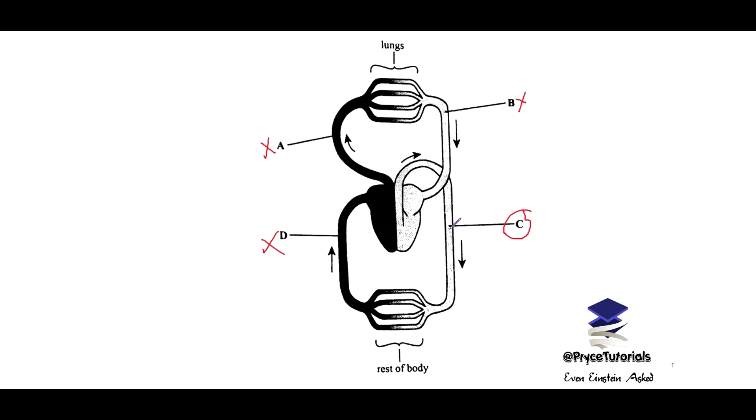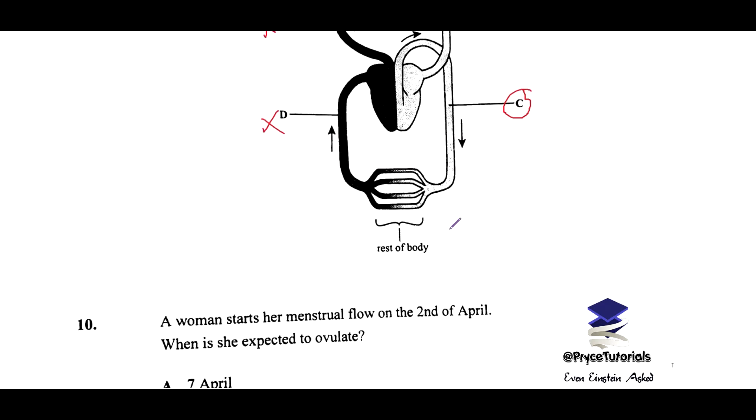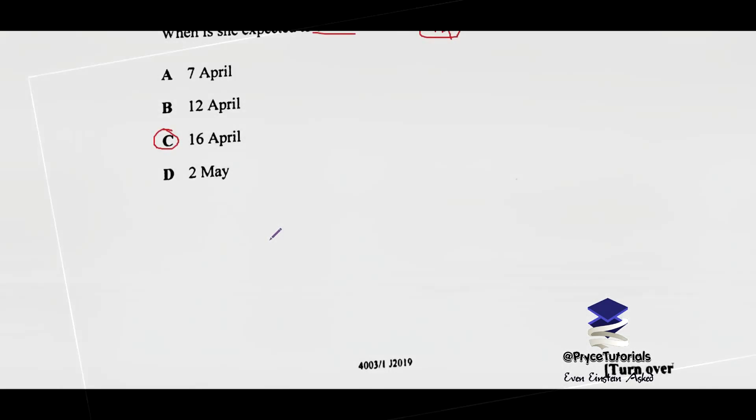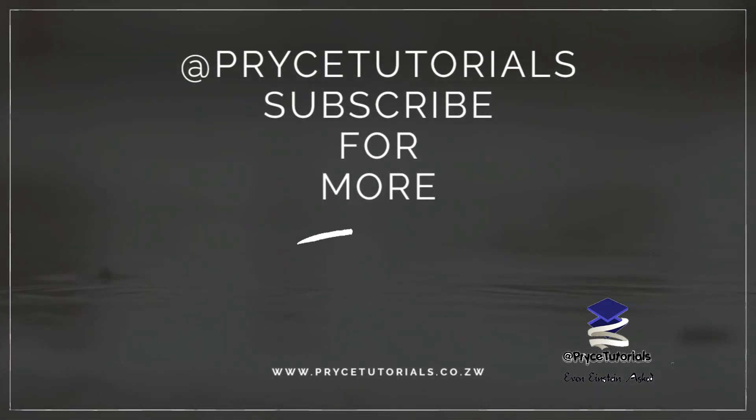And then number 10: a woman starts her menstrual flow on the 2nd of April. When is she expected to ovulate? Okay, when is she expected to ovulate? So she's going to ovulate on the 14th day, so you want to add 14 days from the 2nd of April. That gives you 16 April here. That should be the answer there.